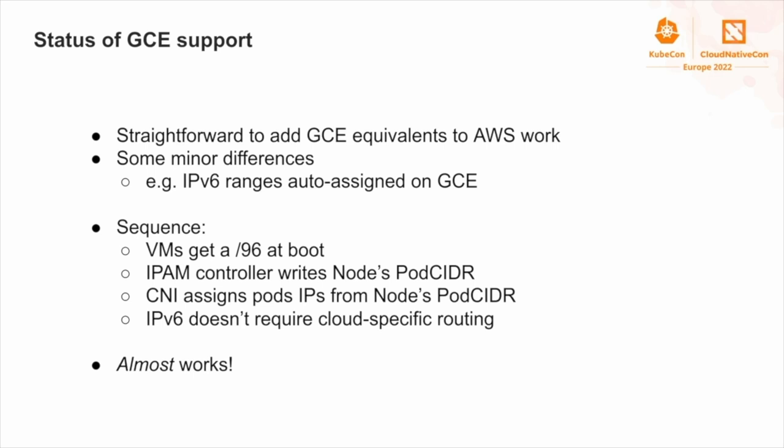There are some minor differences. On GCE, VMs automatically get a /96 IPv6 range, so we don't need to write code to request it for each VM. But in general, the sequence is pretty cloud-agnostic. The VM is assigned an IPv6 range, our IPAM controller writes that into the node's pod CIDR, and the CNI provider then assigns pod IPs from that pod CIDR. Because this sequence is cloud-agnostic, by building on the AWS work, it almost just works on GCE.